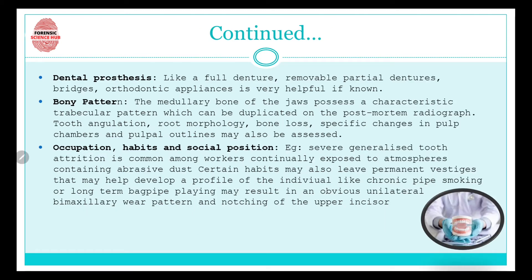Dental prostheses such as full dentures, removable partial dentures, bridges, and orthodontic appliances also help in identification. In old age, people commonly use dentures, and these can help identify a person. Additionally, the medullary bone of the jaws possesses a characteristic trabecular bony pattern.